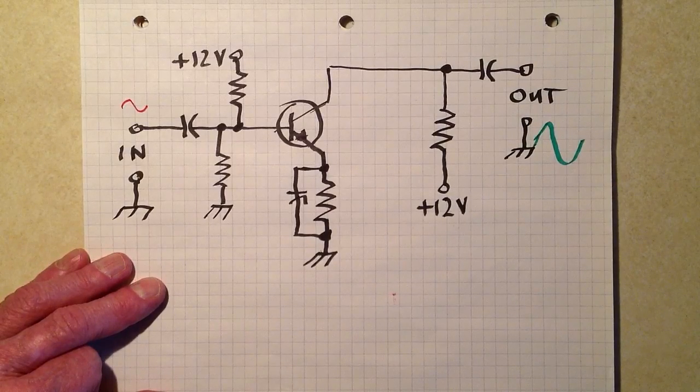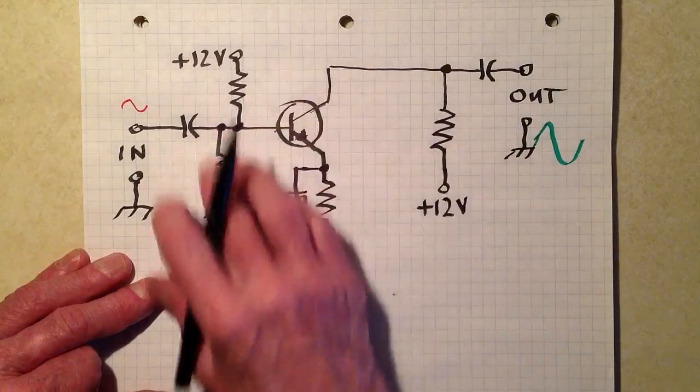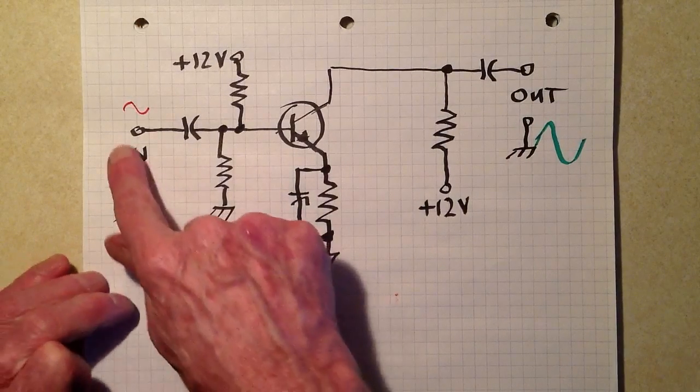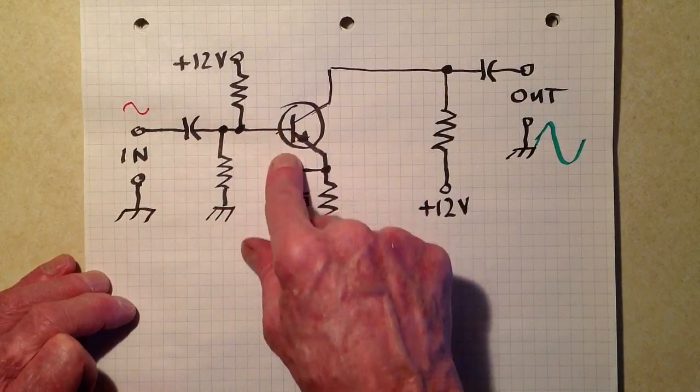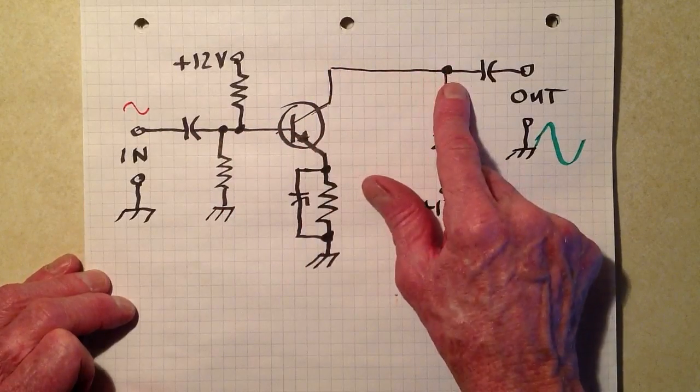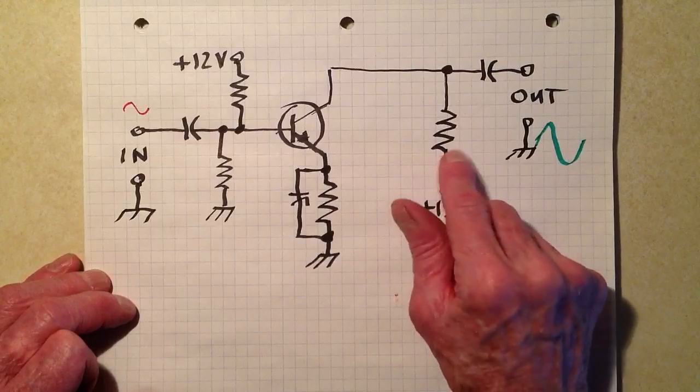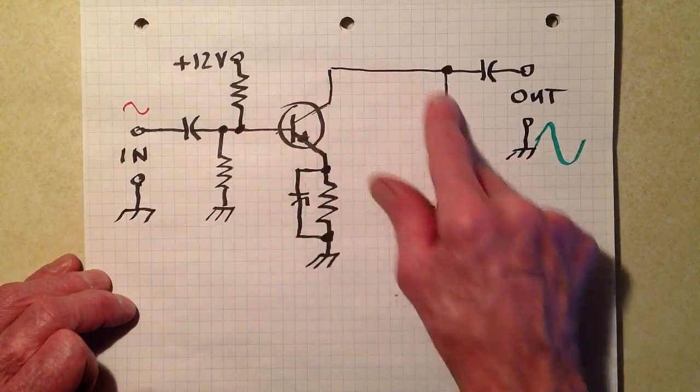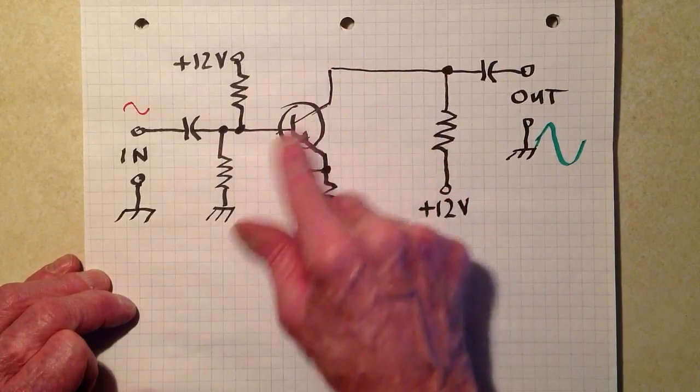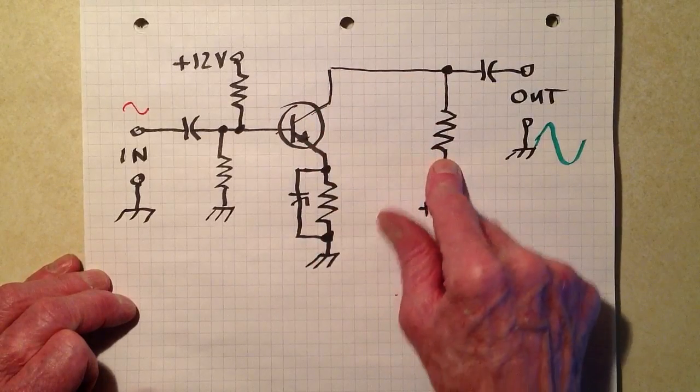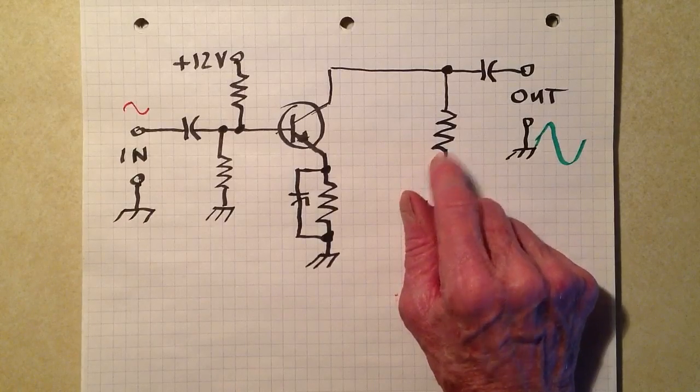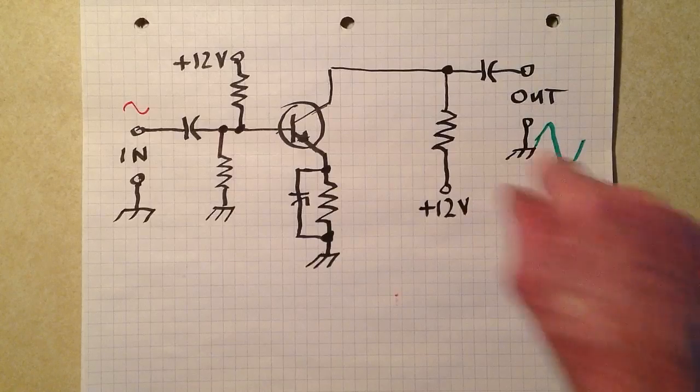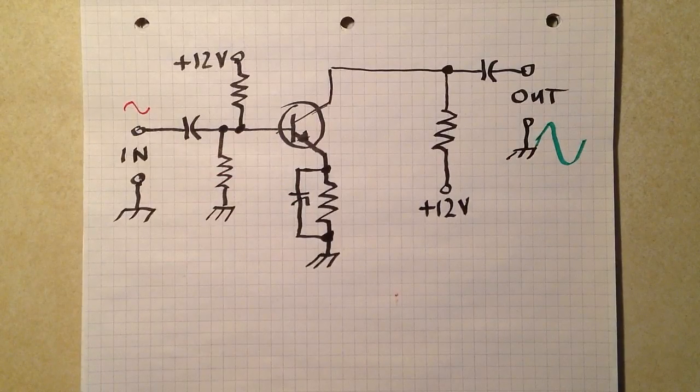The signal comes in here, affects the current that flows through this transistor, and we choose the value of this resistor so that as the current fluctuates, flowing like this, as the current fluctuates, it produces a voltage across this resistor that fluctuates to a much greater extent than the voltage fluctuated at the input.